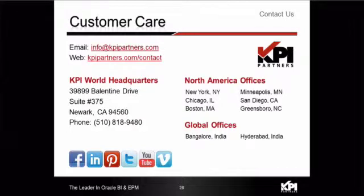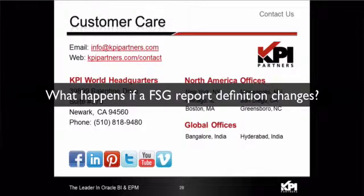Bruce asks: if an FSG report definition changes after we run the migration ETL, what will happen? Very similar to Prasad's earlier question — if the FSG definition has changed, the delta or difference that has changed will be picked up in the next incremental load, so that OBI reports are in sync with whatever latest changes have happened on the EBS side.